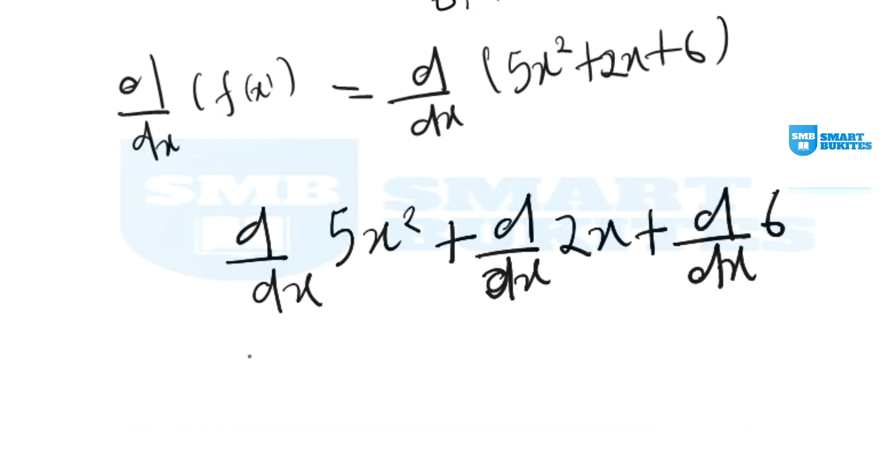If you remember our rule which says nx^(n-1), here we say 2 times 5x^(2-1) which is the power, then plus 1 times 2x^(1-0).